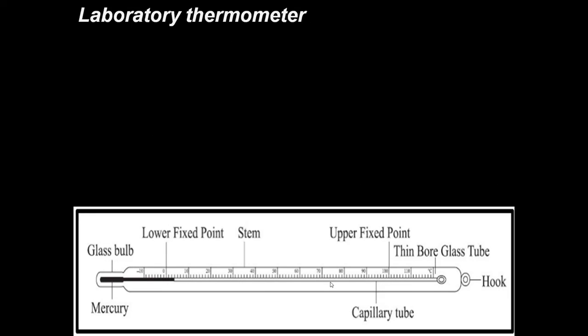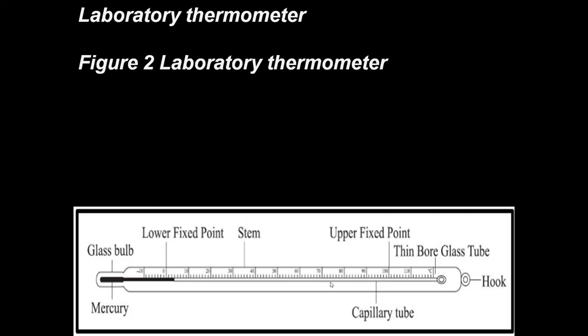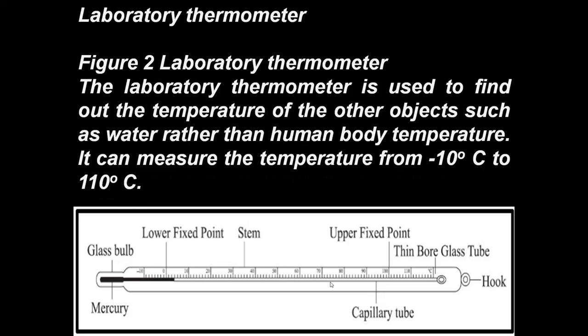The other type of thermometer is the laboratory thermometer, which we use in the laboratory. Look at this image — this is the laboratory thermometer. It is used to find out the temperature of objects such as water. It is not used to find out human body temperature. This thermometer can measure temperature from minus 10 degrees Celsius to 110 degrees Celsius.